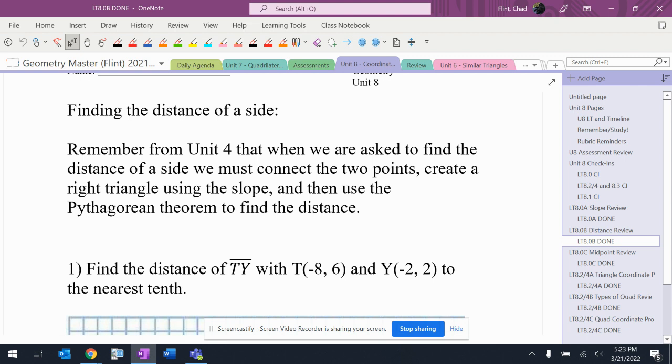When we did that, we were able to compare those sides or add them or subtract them, and we're going to do that with this. So we're going to make sure that we connect the two points, create a right triangle, and then use the Pythagorean theorem.